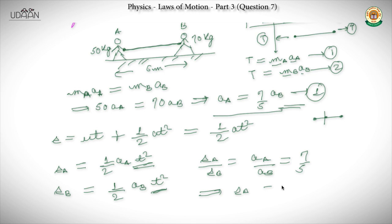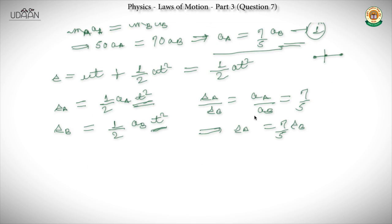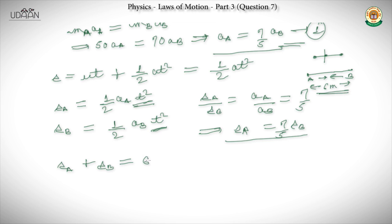We also know the distance relation: when they meet, the total distance covered is 6 meters, so SA + SB = 6. Using SA = (7/5)·SB, we substitute: (7/5)·SB + SB = 6.